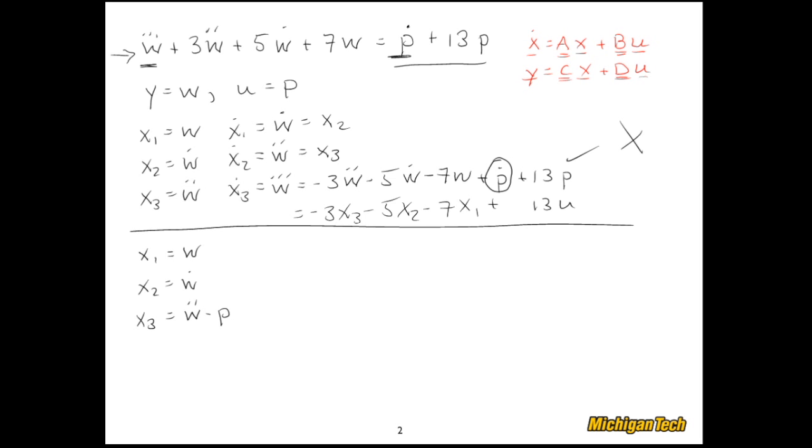The reason I did minus P is because I know that when I differentiate this, X3 dot, so I'm thinking ahead a little bit, I'll have W triple dot minus P dot. So that means I can take this, bring it over to the left-hand side, and put everything here onto the right-hand side. Well, why don't I just do it? So W triple dot minus P dot is equal to negative three W double dot minus five W dot minus seven W plus 13 P.